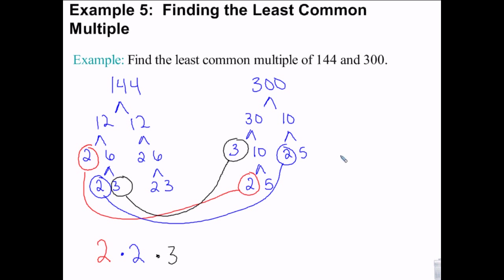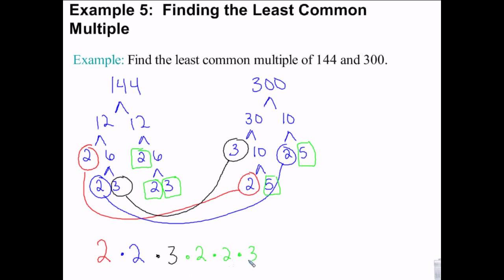300: I could do 30 and 10, which gives me 3 and 10 and 2 and 5 and 2 and 5. To find the least common multiple, I'm going to take every matching pair and write them down. Each pair that matches, you write down one — not both, just one number for each of those pairs.